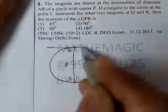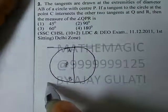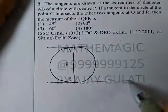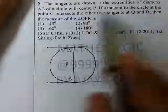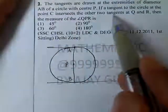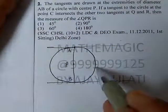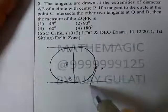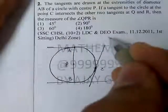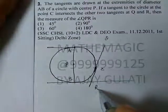We have tangents here at A and B. If a tangent to the circle at point C intersects the other two tangents at Q and R, this point is C. Here is a tangent here. Where are we at Q and R?